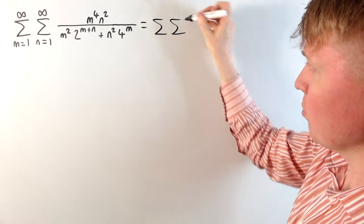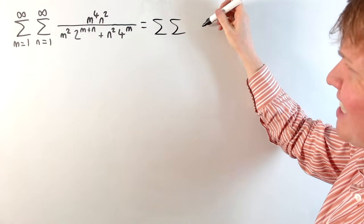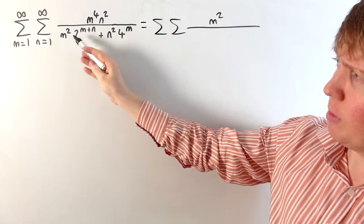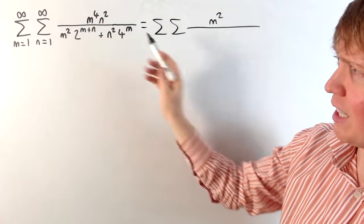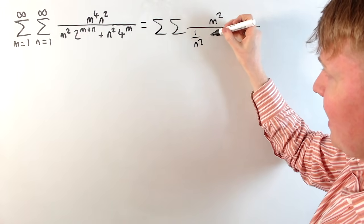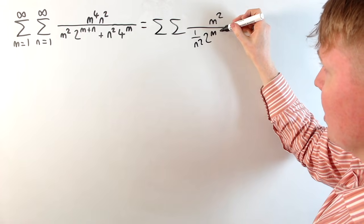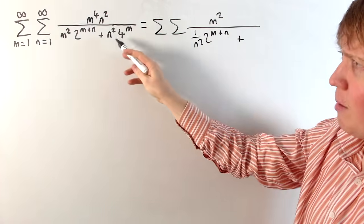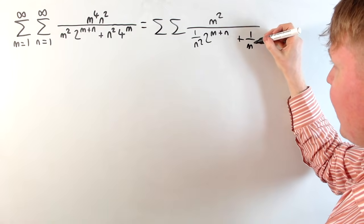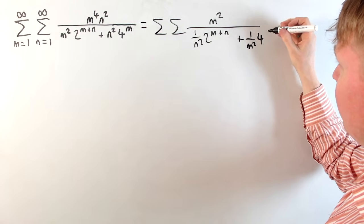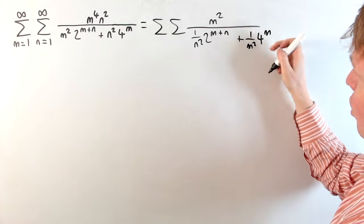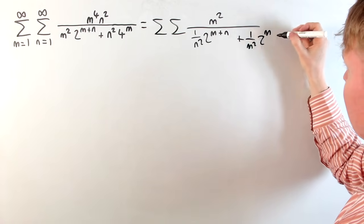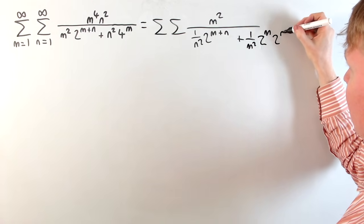We've got the same double sum, so we won't write the m equals 1 to infinity again, but we're now going to have the numerator as m squared, and the denominator — dividing through by m squared and n squared — gives us 1 over n squared times 2 to the m plus n, and our second term is 1 over m squared times 4 to the m. We could actually write 4 to the m as 2 to the m times 2 to the m, because 4 is 2 times 2, using our laws of indices.